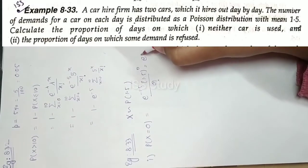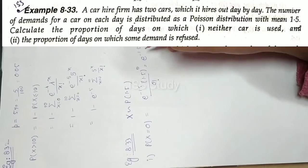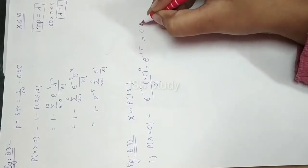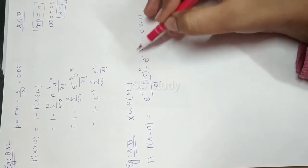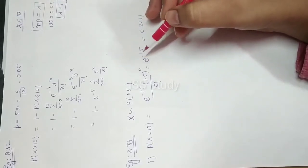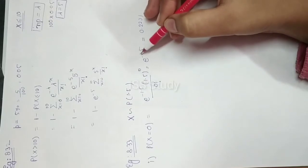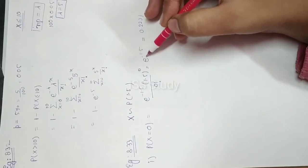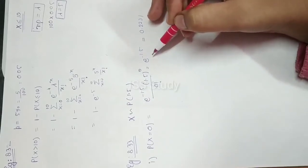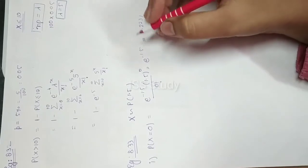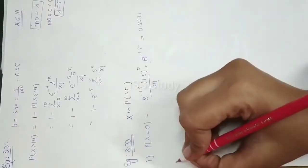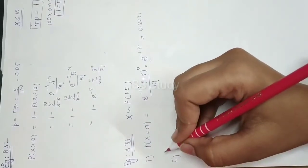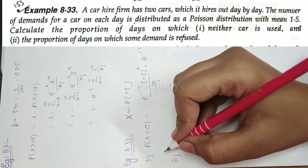So P(x=0) equals e to the power minus 1.5. Given that e to the power x is approximately 2.7, you can compute the numerical value from there. The second part asks for the proportion of days on which some demand is refused.